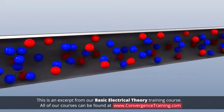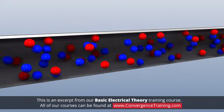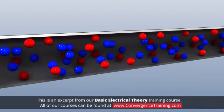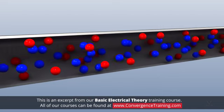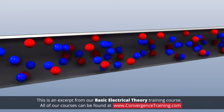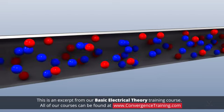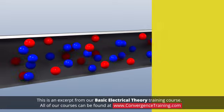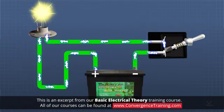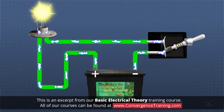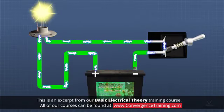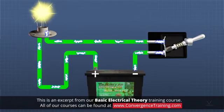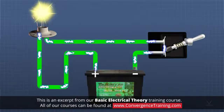Electricity is a form of energy, and is most often thought of in the context of energy flowing through an electrical circuit. An electrical circuit is a conductive path through which electricity can flow.